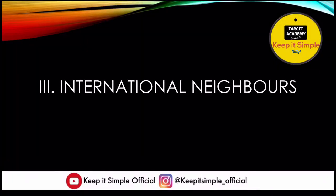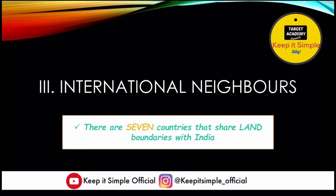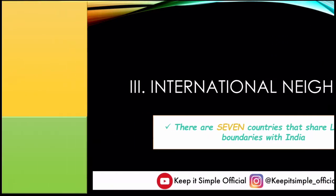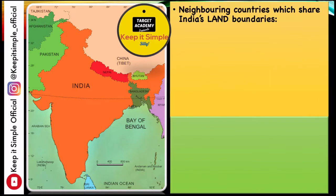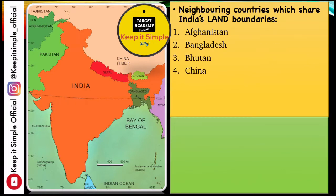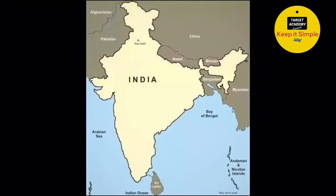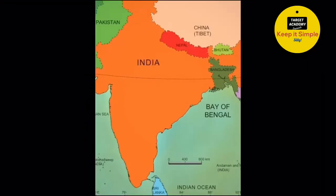International Neighbors: There are 7 countries that share their land borders with India. This chapter is very important from the competitive exams point of view and from the school exam point of view — there are many questions from it. You should know that India shares its land border with 7 countries. These countries are: Afghanistan, Bangladesh, Bhutan, China, Myanmar, Nepal, and Pakistan — listed here in alphabetical order.